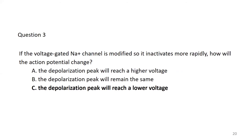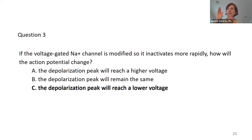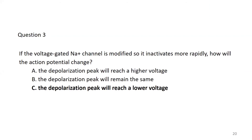Student: I was wondering if action potentials occur between the myelin sheaths. Dr. Carbry: Yes, that's exactly my next slide. It's going to happen between the different spaces between the myelin — in the nodes of Ranvier. Not all axons are myelinated, though. But yes, if they are myelinated, that's a very important factor in movement of the action potential down the axon.